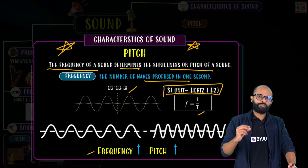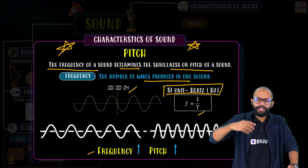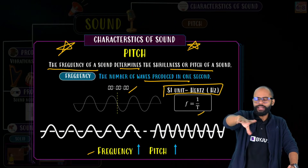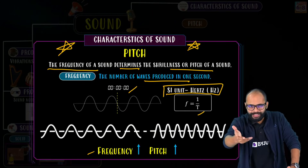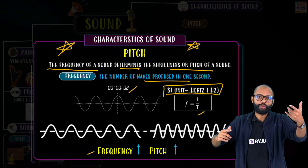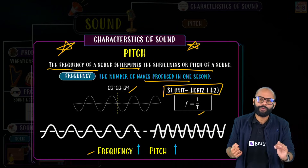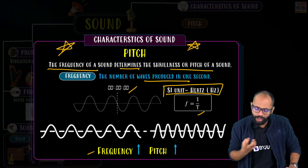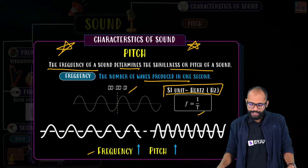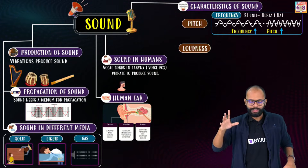When frequency is high, pitch is high — the sound is shrill. When frequency is low, the sound is deep. So high frequency means high pitch (shrill sound), and low frequency means low pitch (deep sound). Pitch depends on frequency.